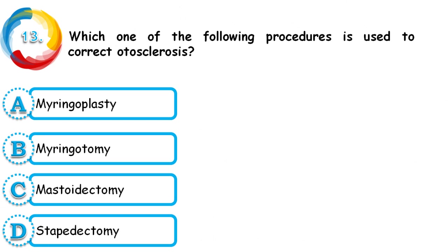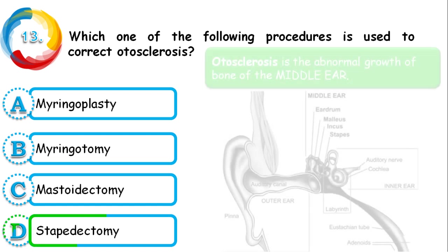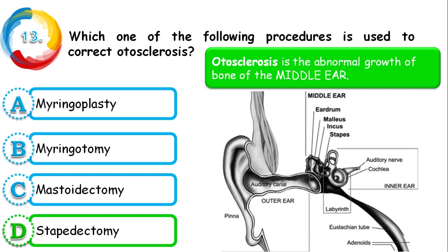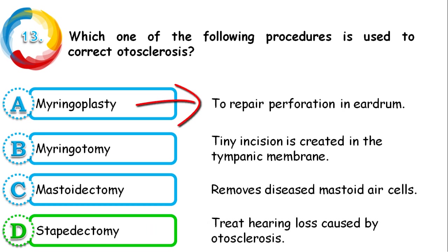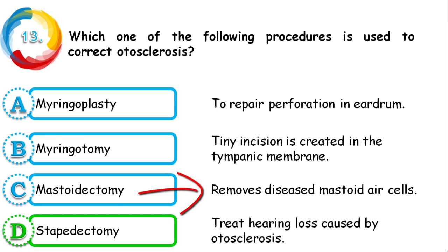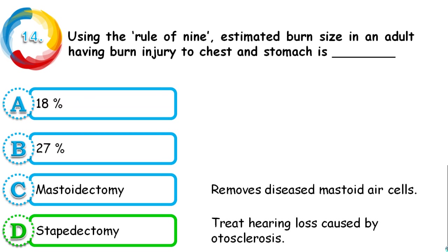Question 13: Which procedure is used to correct otosclerosis — myringoplasty, myringotomy, mastoidectomy, or stapedectomy? The correct answer is stapedectomy. Otosclerosis is an abnormal growth of bone in the middle ear (area of eardrum, malleus, incus, and stapes), causing conductive hearing loss. Stapedectomy treats this. Myringoplasty repairs perforations in the eardrum; myringotomy creates a tiny incision in the tympanic membrane; mastoidectomy removes diseased mastoid ear cells.